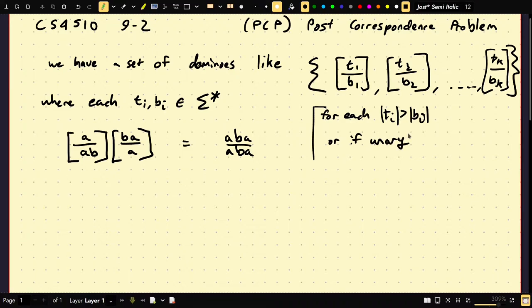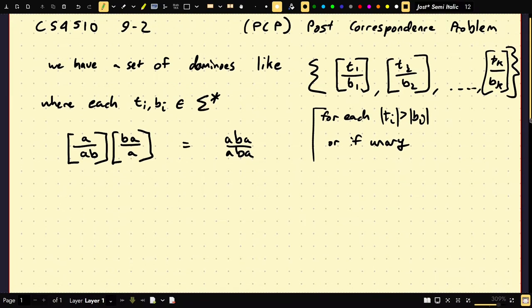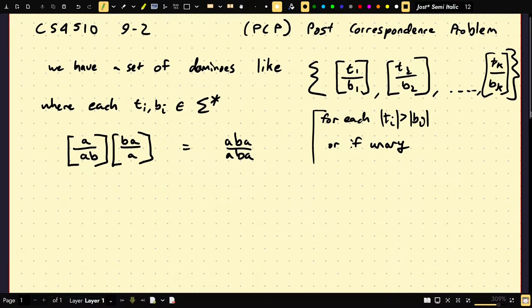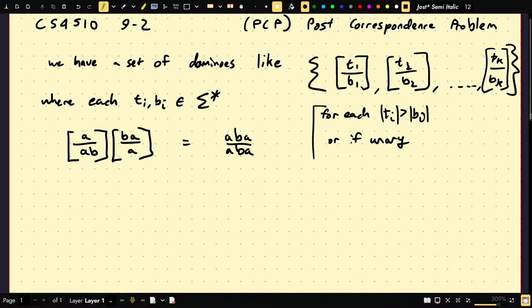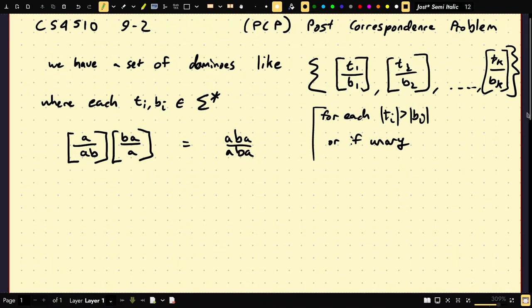Also, if it's unary, it's also decidable. I won't get into that, but this is sort of a general problem. So you're given a set of dominoes, and we're asking you to find a match. You're allowed repetition, you're allowed to repeat things many times, but there has to be a sequence, which is finite, of these dominoes copied. So the top and bottom strings lay out to be equal.